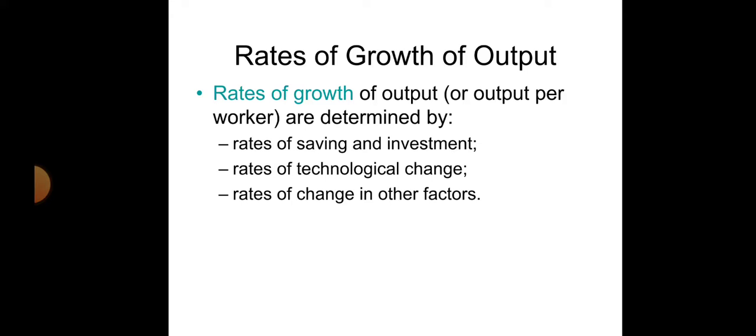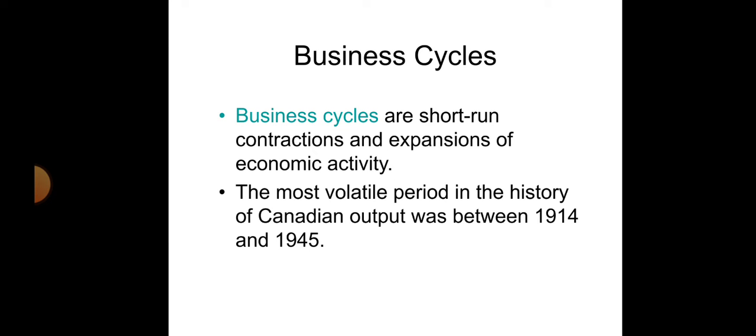Rates of growth of output, or output per worker, are determined by several factors: the rates of savings and investment — how much of your savings and investment — what are the rates of technological change in your economy, and what are the rates of change in other factors. All these factors determine the rates of growth of output.